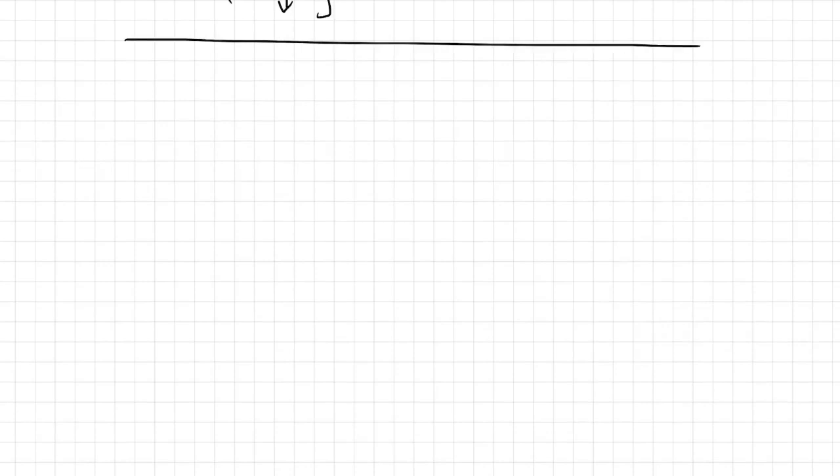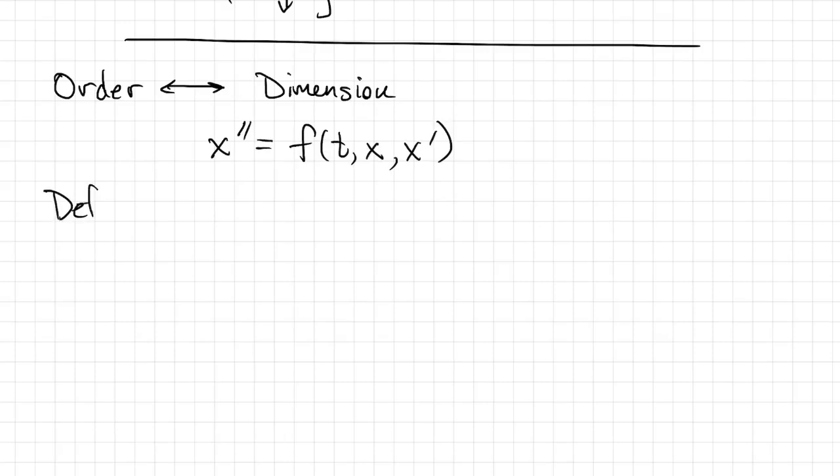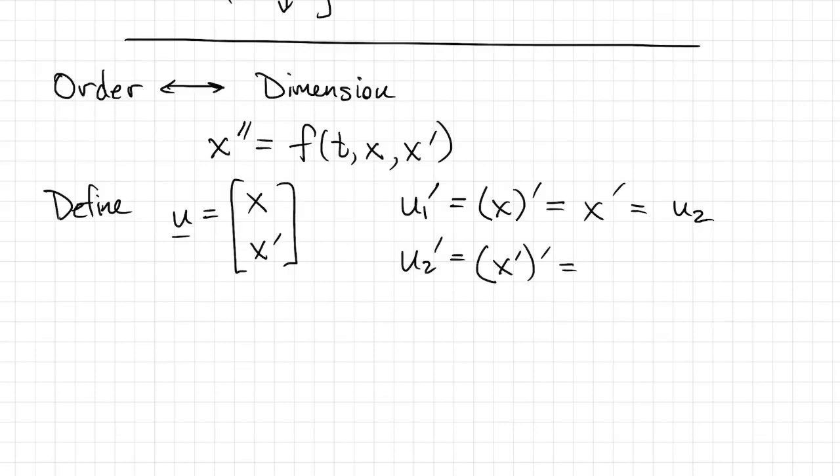There's an important fact that it turns out that we can exchange order of an equation for more dimensions. So here's our second order problem again. I'm going to define a vector whose components are the variables x and x prime. Then u1 prime is x prime, but that's what we called u2. And u2 prime is x double prime, but that comes from the differential equation, f of t, x, and x prime. And we called x u1 and x prime u2.